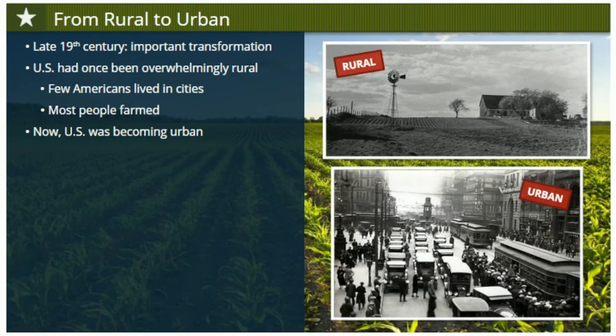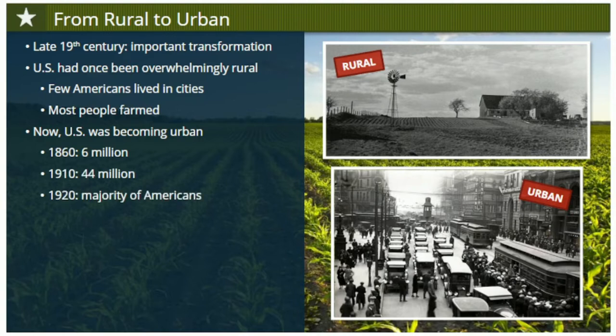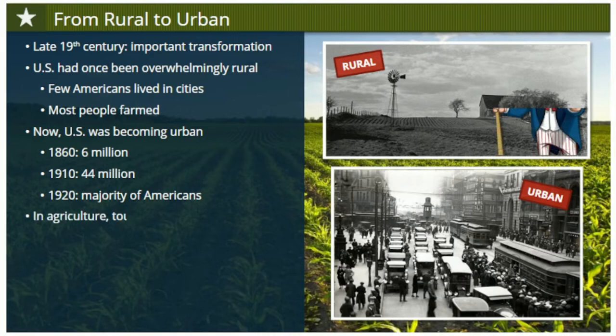The growing American population, swelled by new immigrants, centered around large cities. In 1860, 6 million Americans had lived in cities. By 1910, 44 million would, and by 1920, a majority of Americans would be city dwellers. Fewer people chose a lifestyle of farming, and for the millions that still worked in agriculture, times were tough.